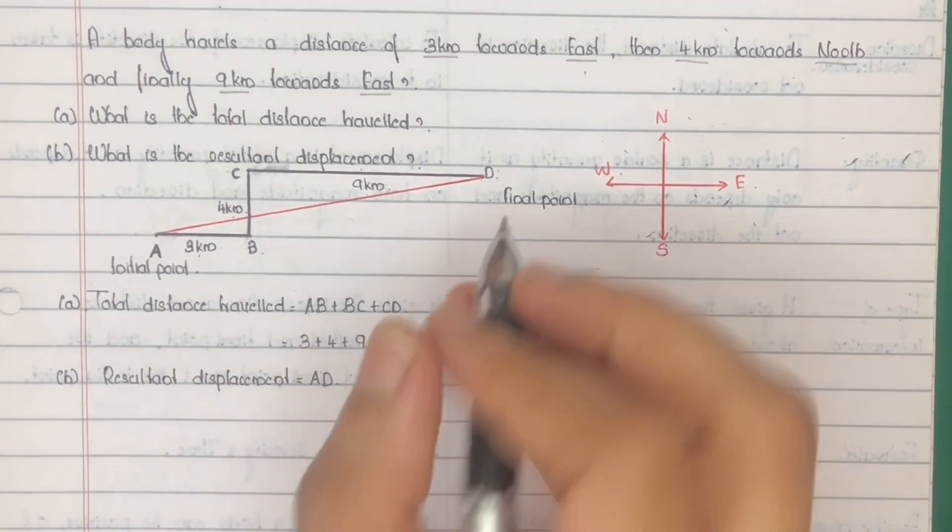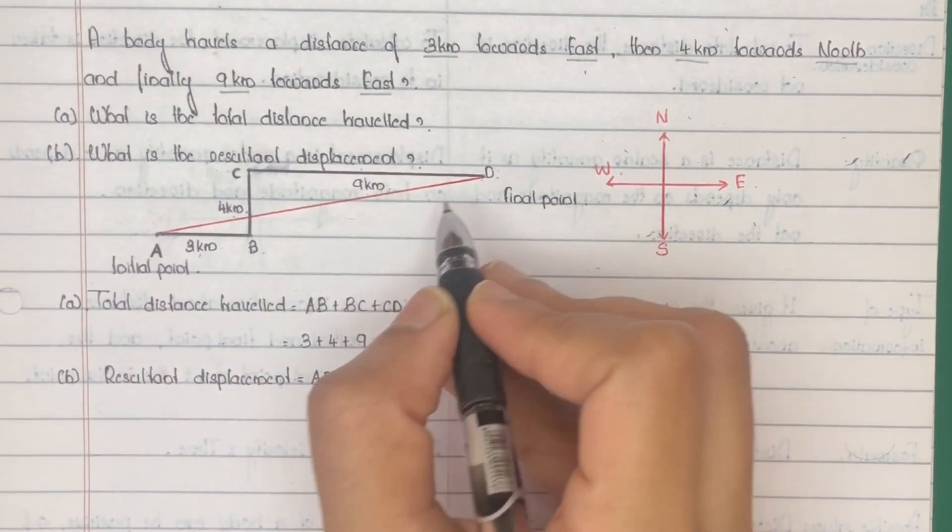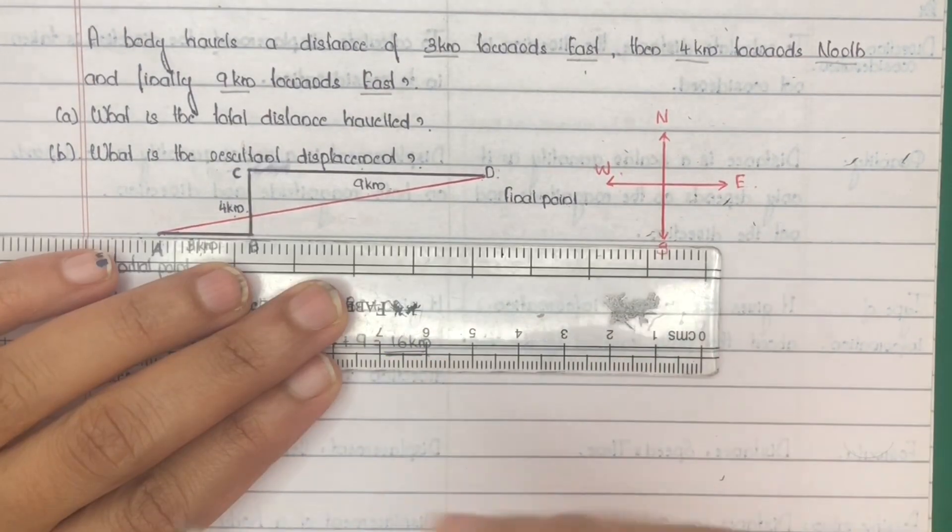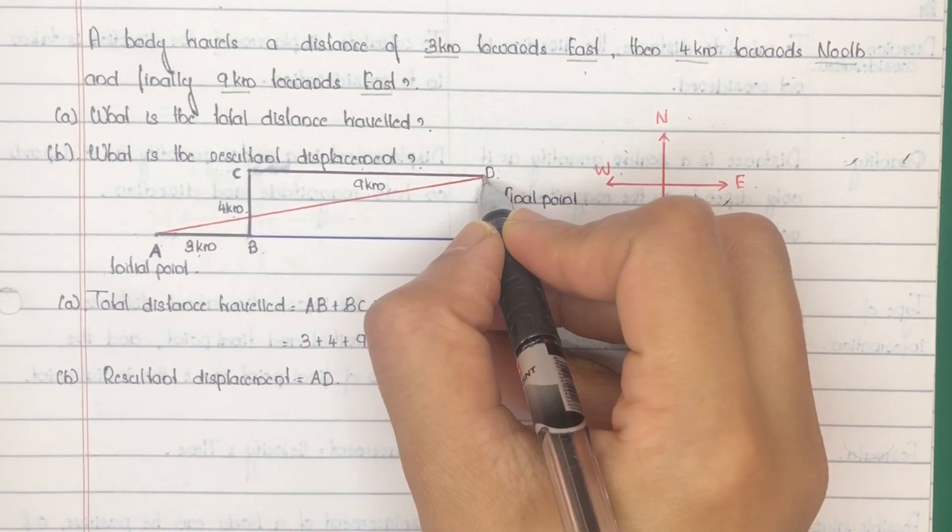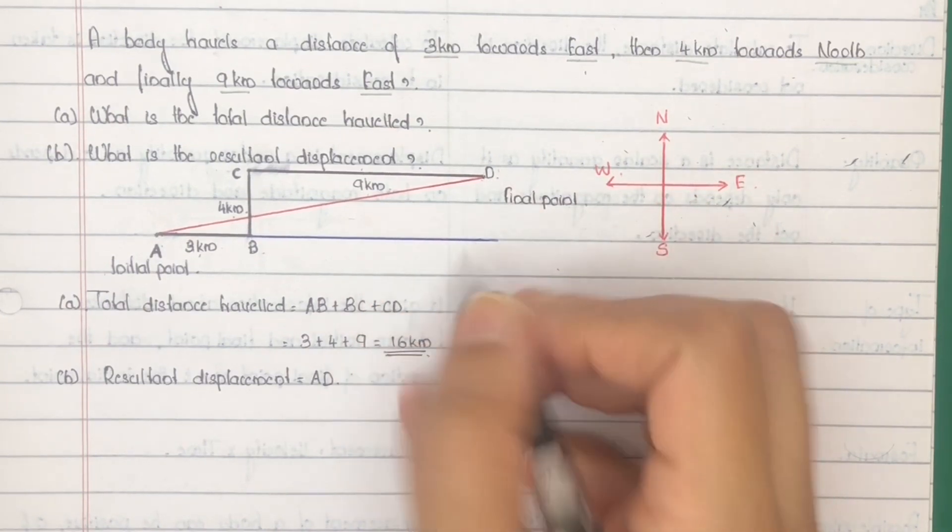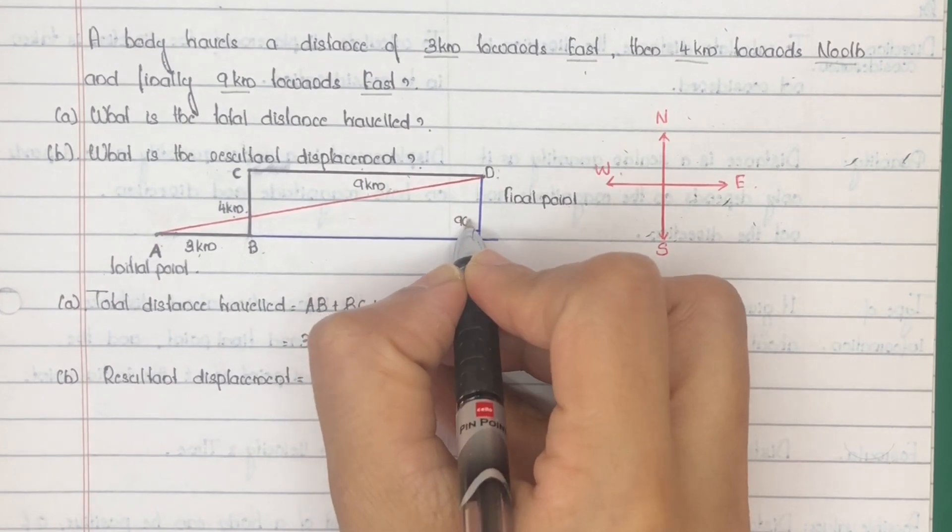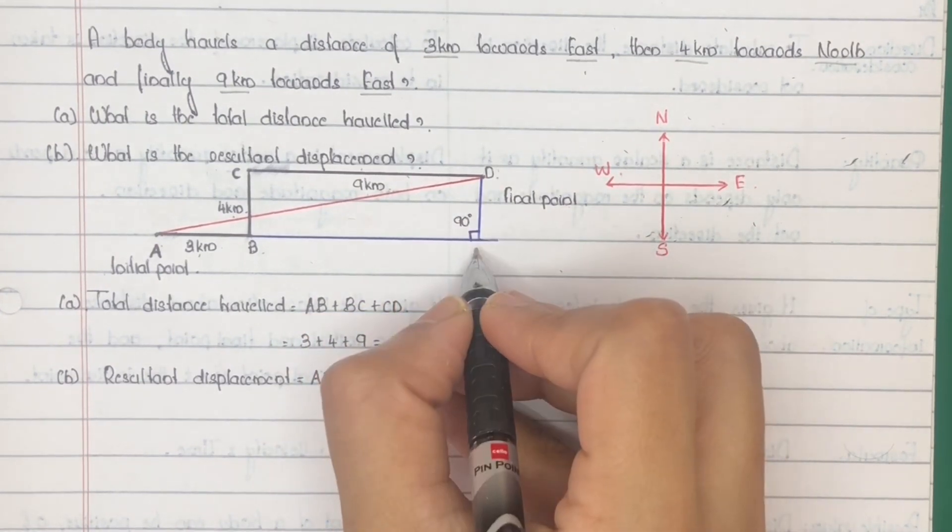Next find the length of AD. For finding the length of AD, construct a right-angled triangle. For that, extend this AB and then draw a perpendicular from D to this extended portion. This is perpendicular, that is 90 degrees. And mark this point as E.